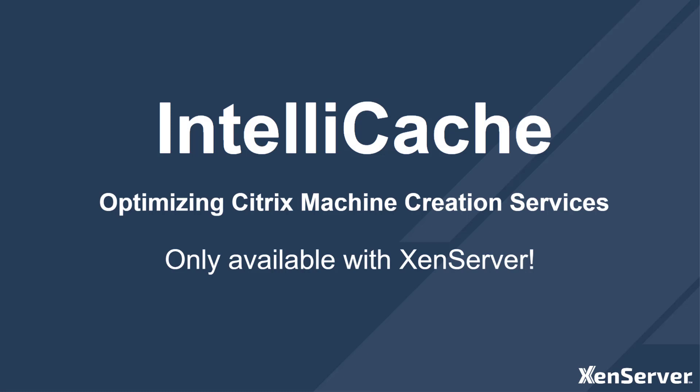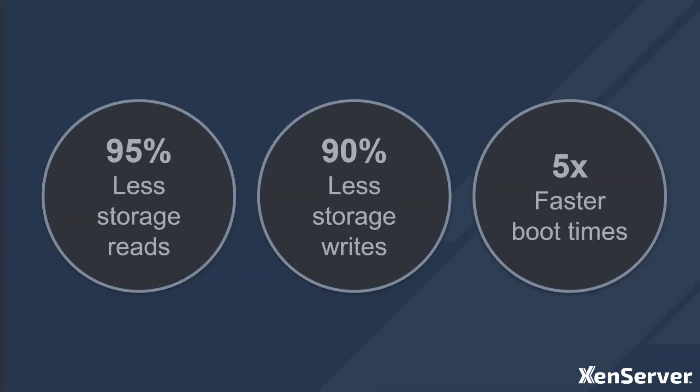Today I'm going to be talking about how the IntelliCache feature of XenServer works and how you can configure it. This XenServer feature can deliver significant reduction in shared storage usage, whilst also accelerating VM performance when delivering images via the Citrix Machine Creation Services. This can be particularly effective during boot storms, reducing storage load by up to 95% and reducing boot times by 5 times.